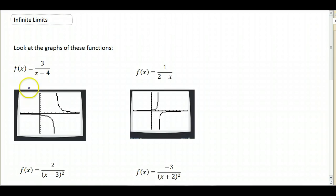Here we have the graph of f of x equals 3 over x minus 4, and it looks like there's a vertical asymptote going through at x equals 4.